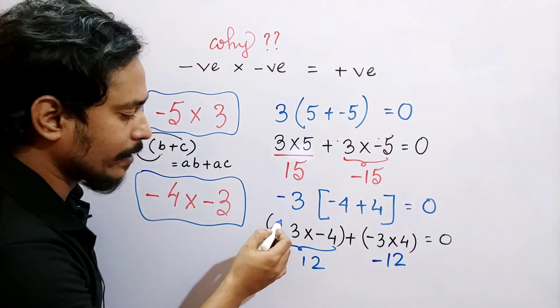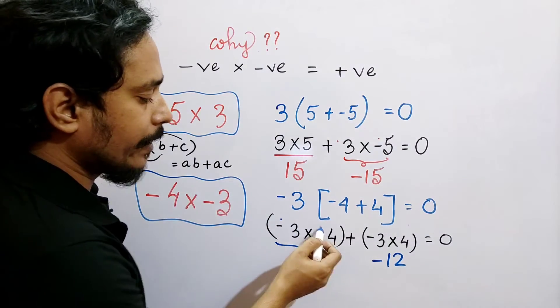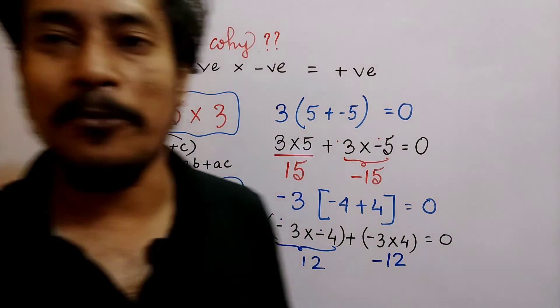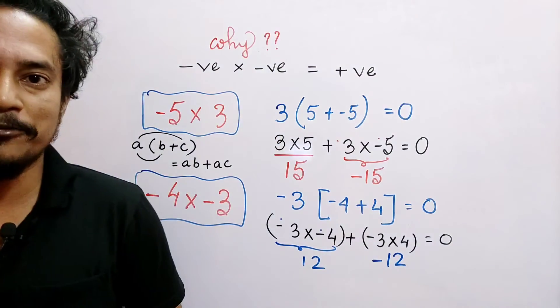This equals 0. That's why when a negative number is multiplied with a negative number, it becomes positive.